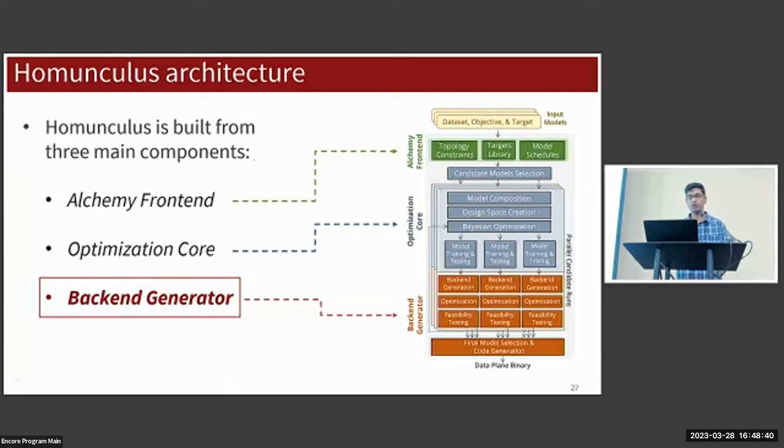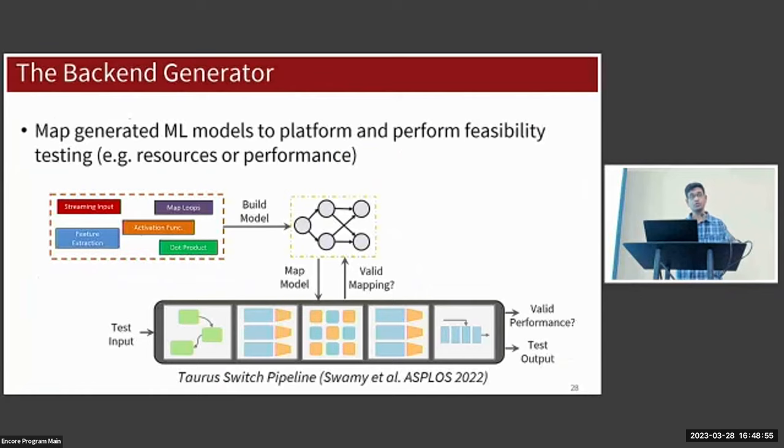Lastly we'll look at the backend generator. As we just discussed, the backend generator is creating the hardware code for the ML model candidates produced by the optimization core. The backend generator uses a collection of code templates for components of common ML algorithms and packet processing functions, and we're going to use that to build an ML model that can actually operate in our network. This model is then mapped onto the data plane platform.